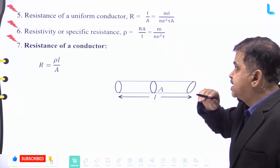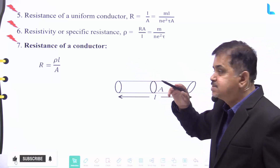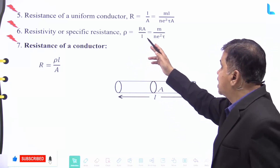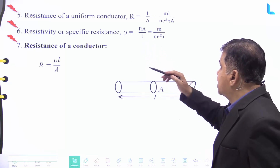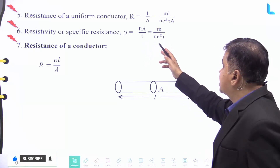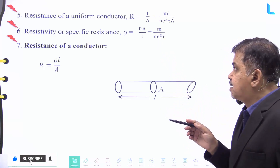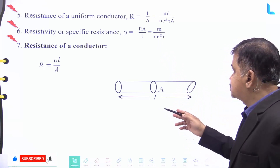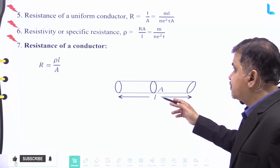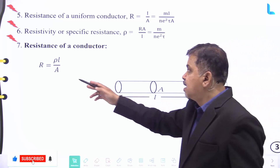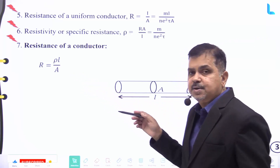Number six: the resistivity or specific resistance ρ is given by R × A divided by l, which is equal to m divided by n × e² × τ. The resistance of a conductor of length l and area of cross-section A is given by R equal to ρl divided by A.